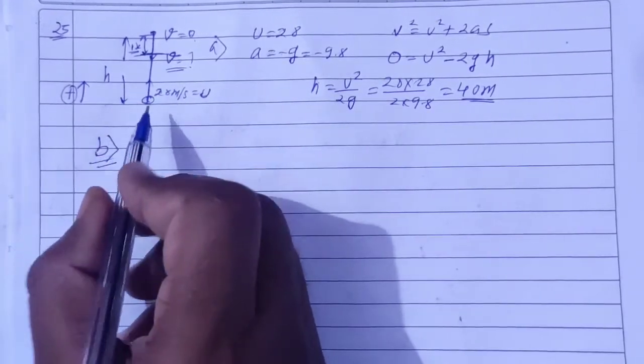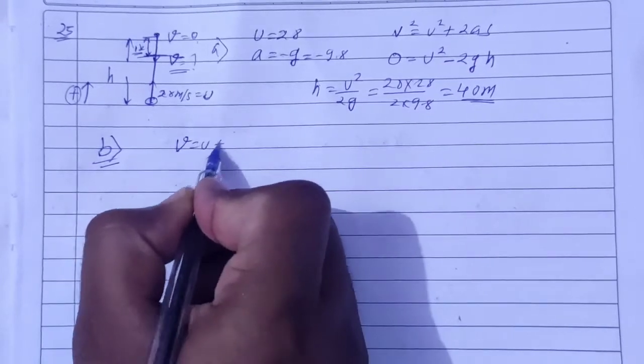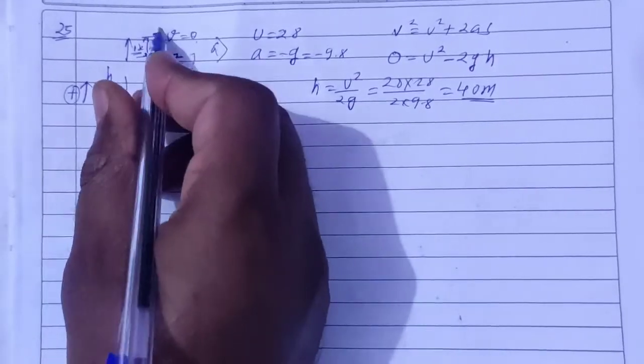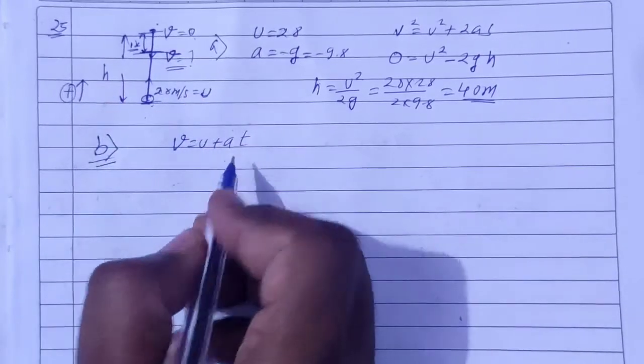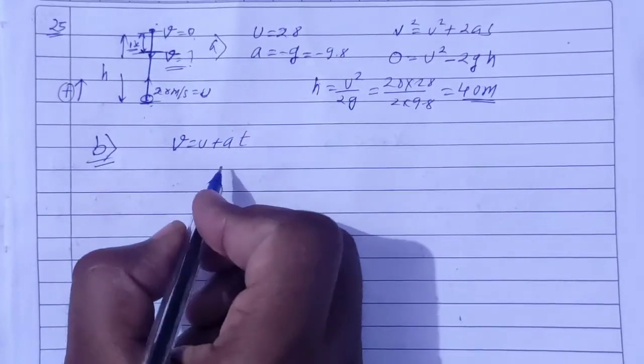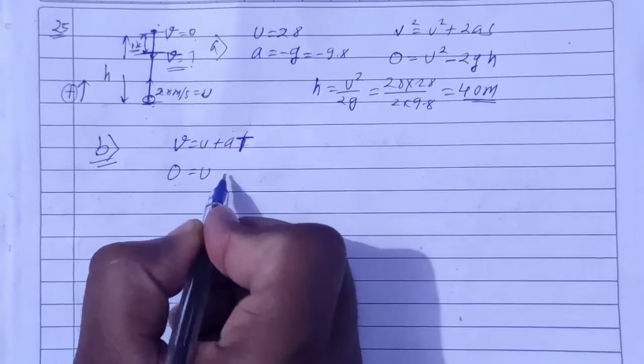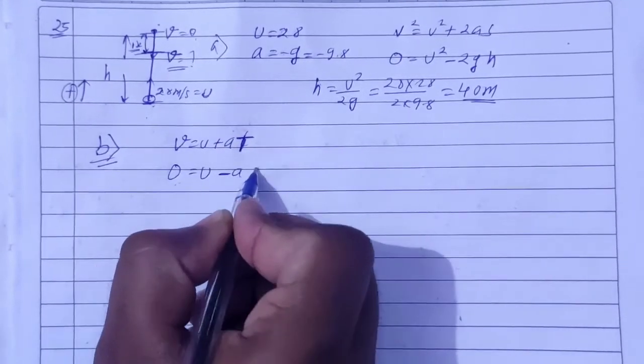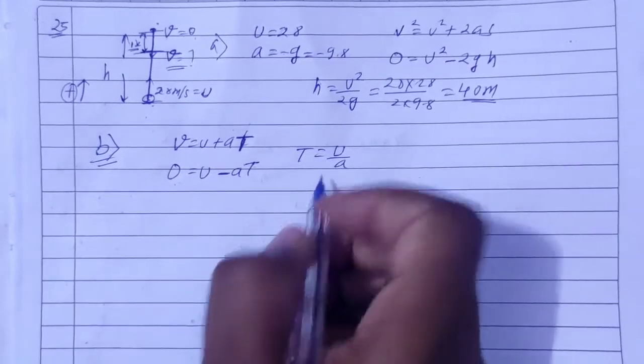First, let's find the total time to reach maximum height. Using the first equation: v = u + at. From initial point to highest point, v becomes zero, u is given. So the total time T = u/a, which is T = u/g.